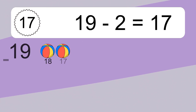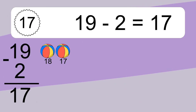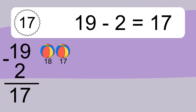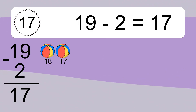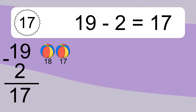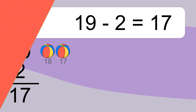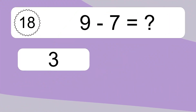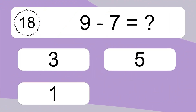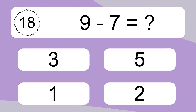19 minus 2 equals what? 19 minus 2 equals 17. Let's count it: 18, 17.